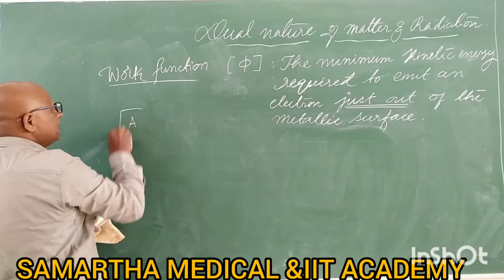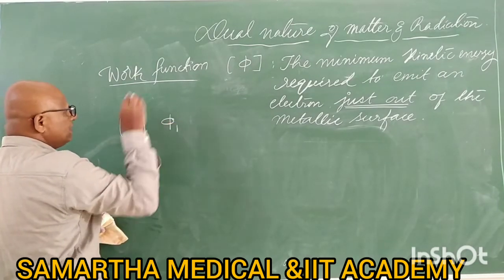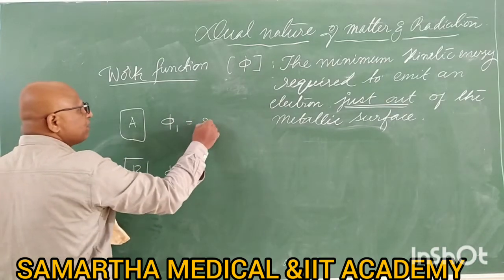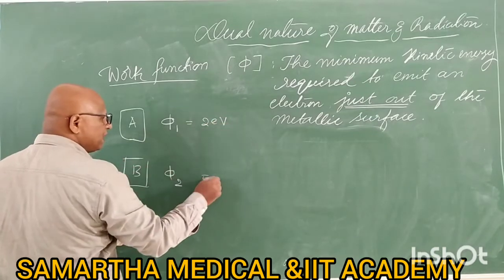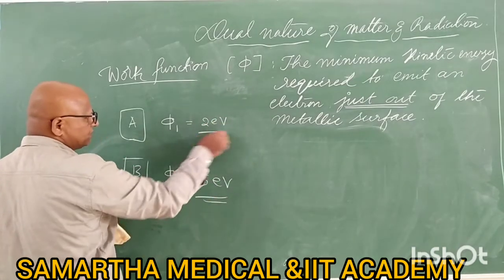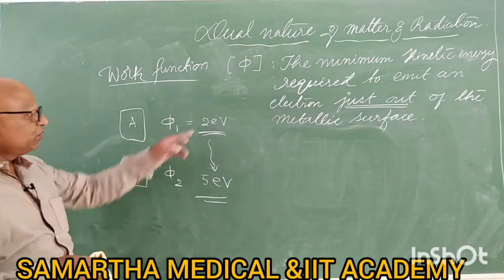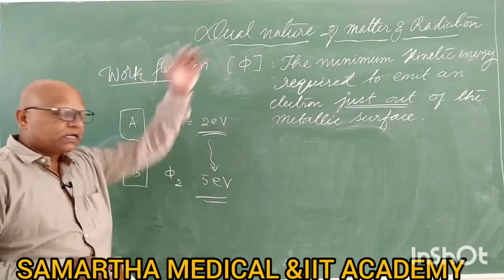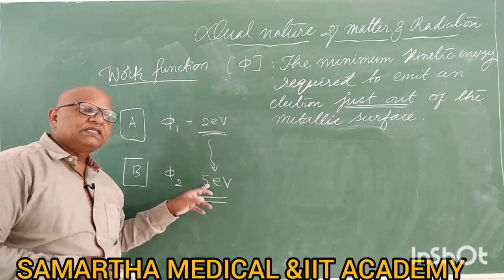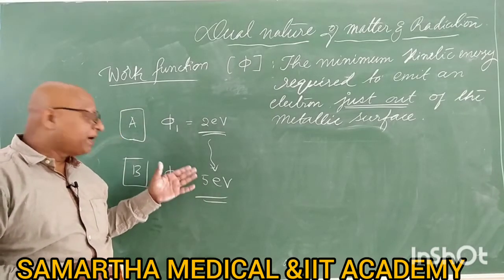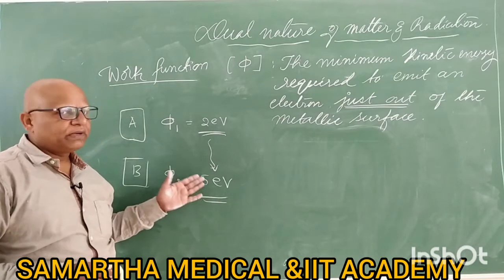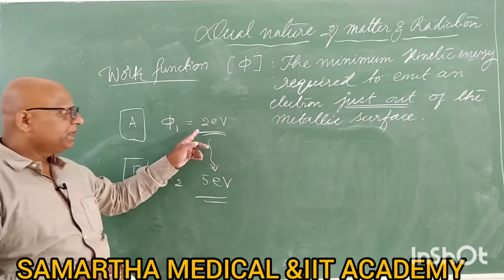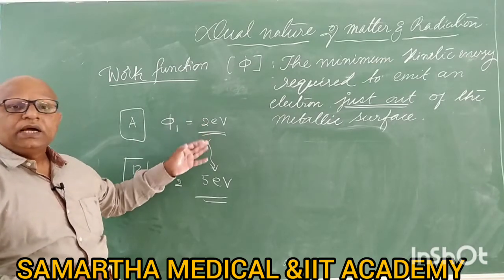One metal A has work function phi 1, another metal B has work function phi 2, and this varies from 2 eV to 5 eV for all the metals. For metals like platinum and other heavier metals, this goes up to 5.7 eV, 4.8 eV, 5 eV, 5.3 eV. For lighter metals like copper and some others, it will be of the order of 2 to 3 eVs.